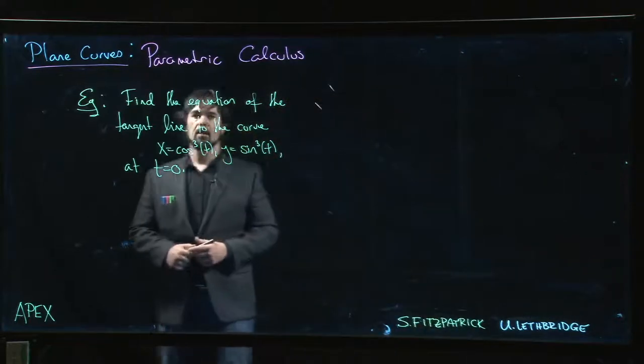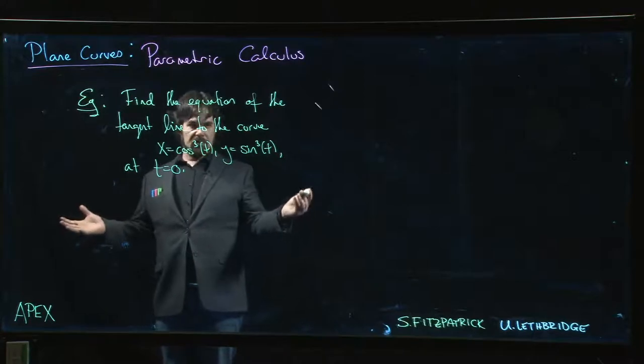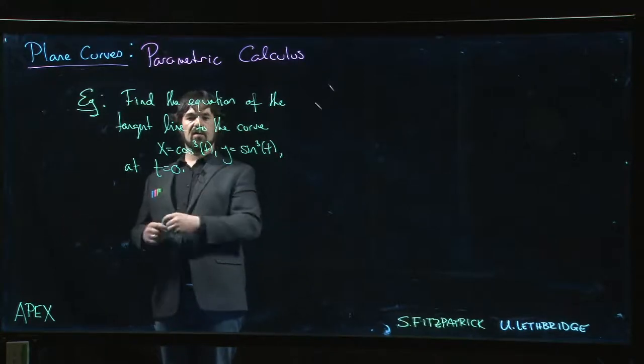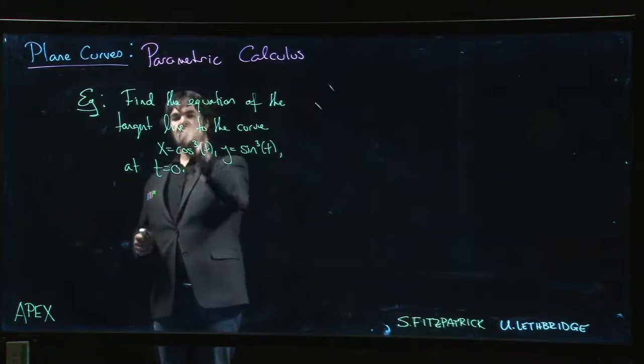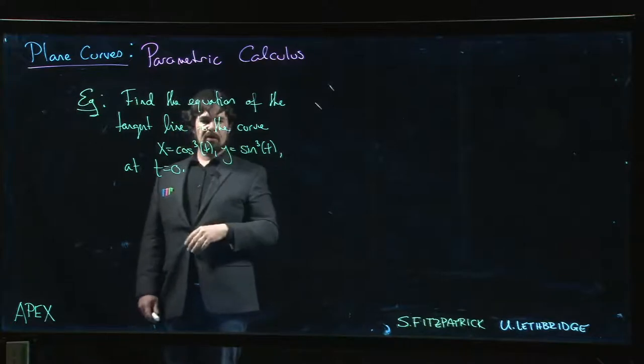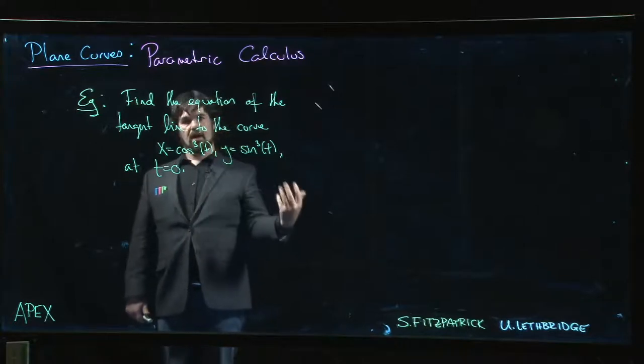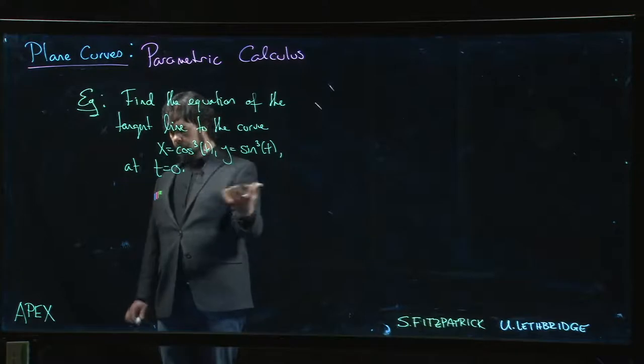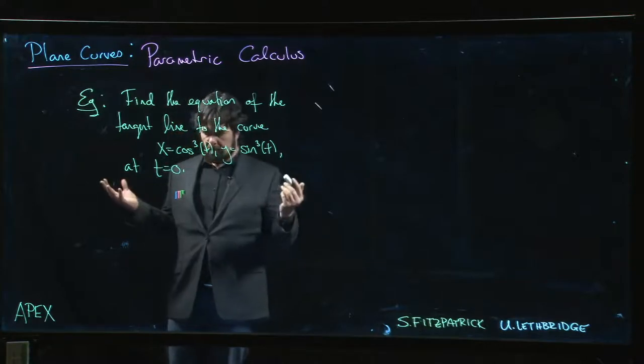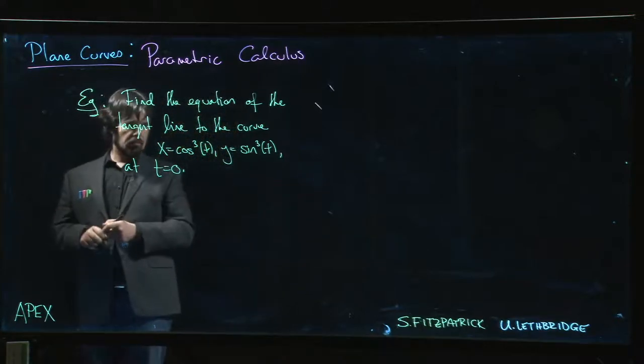Alright, onto the next example. This asks to find the equation of the tangent line to the curve given by these parametric equations: x equals cosine cubed t, y equals sine cubed t, and it asks us for the equation at t equals zero.